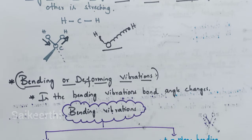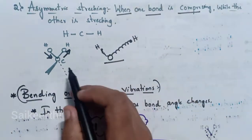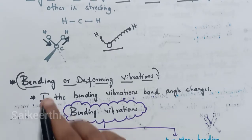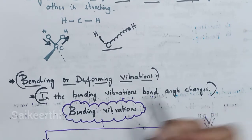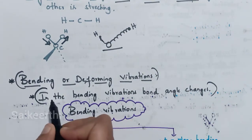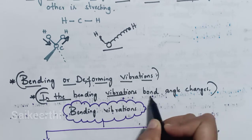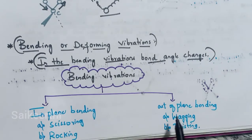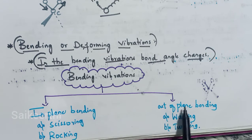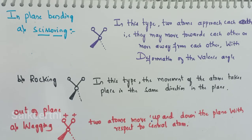In both symmetric and asymmetric stretching, there is no change in bond angle. Coming to bending or deforming vibrations, the bond angle changes — this is the important point. Bending vibrations are classified as in-plane bending and out-of-plane bending. In-plane bending includes scissoring and rocking; out-of-plane bending includes wagging and twisting.